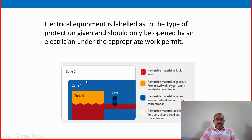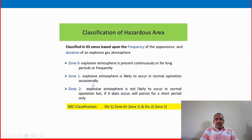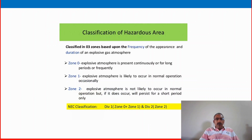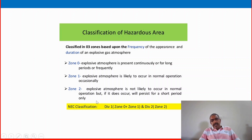In Zone 1 areas, small valves, vent lines, nozzles and instrumentation connections are present, so an explosive atmosphere is likely to occur in normal operation. Zone 2 — it is away from the normal flammable or explosive area, and explosive atmosphere is not likely to occur in normal operation. But if it does occur, it will persist for a short period only. Zone 2 is practically a safe area.